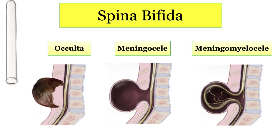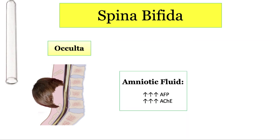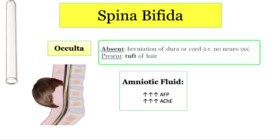Now let's move on to spina bifida, which occurs when you fail to close the neural tube down near the tailbone. Spina bifida occurs with variants: occulta, meningocele, and meningomyelocele. First is spina bifida occulta, where the neural tube fails to close but there is no herniation of the dura or spinal cord. The giveaway for spina bifida occulta will be a tuft of hair in the midline of the baby's low back and no neurological defects. Occulta means hidden — this will be the hardest variant to recognize on test day because there's nothing about this defect that screams neuro. The only tidbit to remember is that a tuft of hair in a baby's low back equals spina bifida occulta.